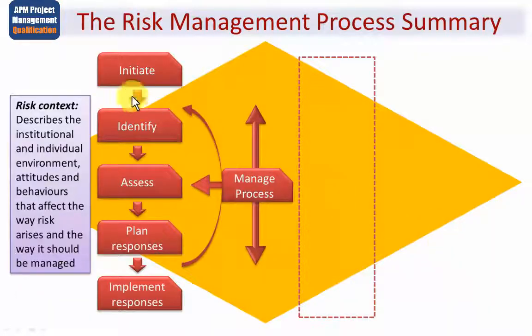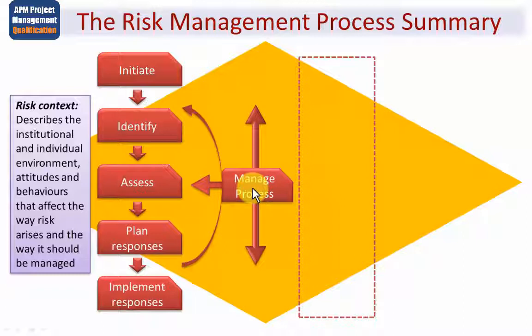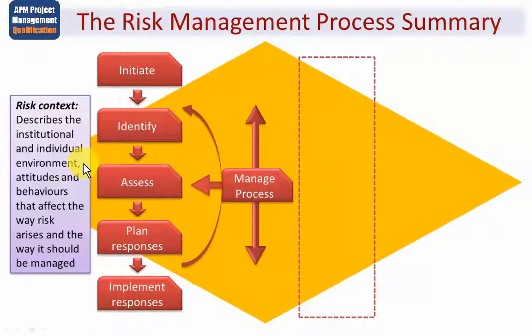The risk management process steps are: initiate, identify, assess, plan risk responses, and then implement the responses. There is an iterative relationship between these steps. The process is first used during the planning of the project, but as the project progresses through its various stages the original assessment and responses may change and need to be updated — some risks will go away, many will change their probability and impact. Another term to become familiar with is risk context, which describes institutional and individual environment, attitudes and behaviours that affect the way risk arises and how it should be managed.